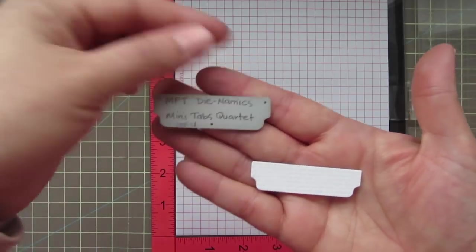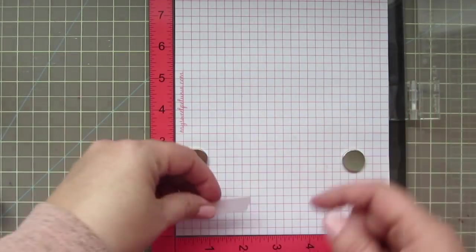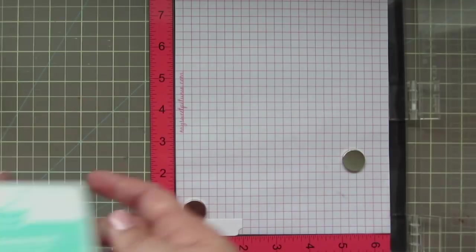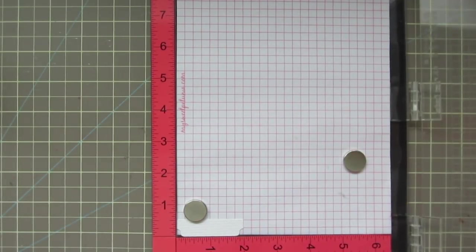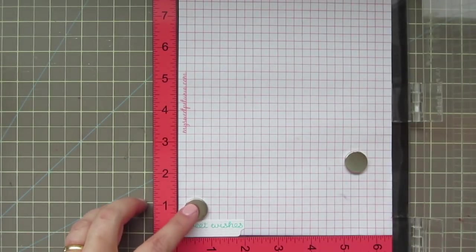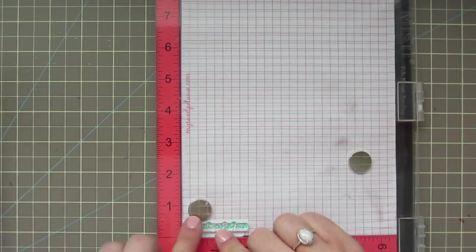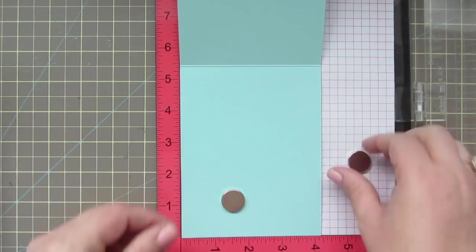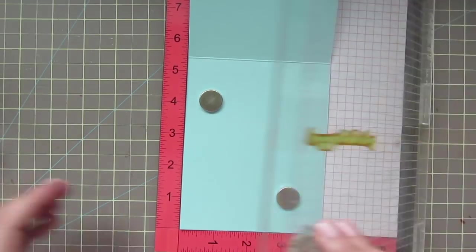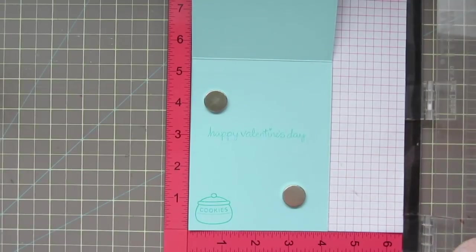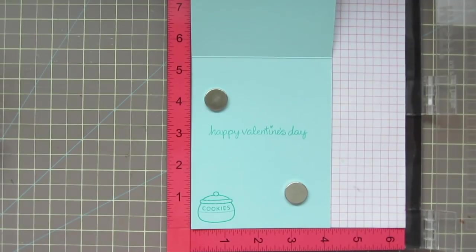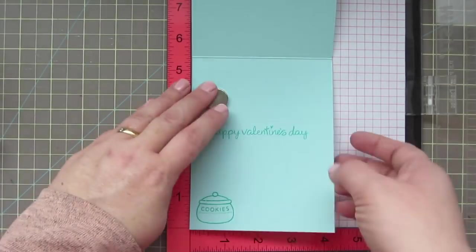Then I trimmed out a little tab with one of the MFT Mini Tabs Quartets, and I'm going to use that to stamp my sentiment on. So I'm just going to stick that in my Misti, and I'm going to grab some Lawn Fawn Merman Ink to bring out one of the other colors that we used in our coloring today. And I'm just going to stamp down the Sweet Wishes sentiment that's included in the Milk and Cookies stamp set. While I have my Misti out, I'm going to go ahead and stamp the inside of my card. I'm using the little cookie jar from the Milk and Cookies set, and then the Happy Valentine's Day sentiment is from the My Silly Valentine set from Lawn Fawn. And there's a look at that one. That was actually the original Valentine set that Lawn Fawn released.